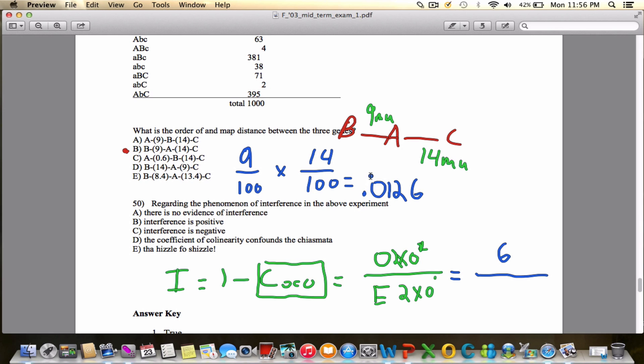And that gives me my answer of 0.0126. So remember, this answer here is the probability of double crossovers. So how do I find out the expected number of double crossovers?